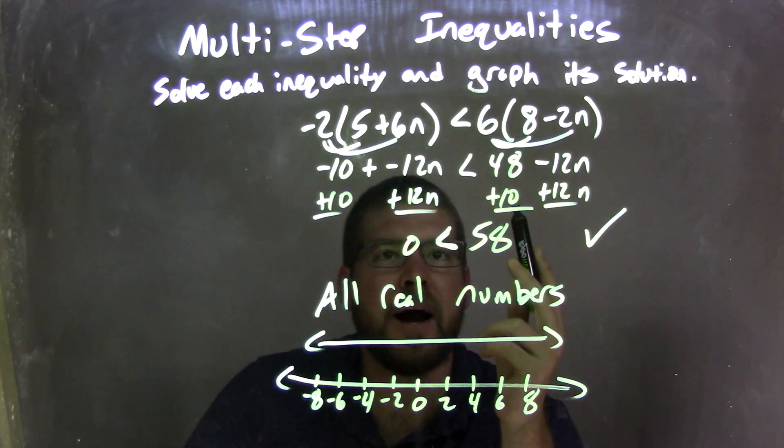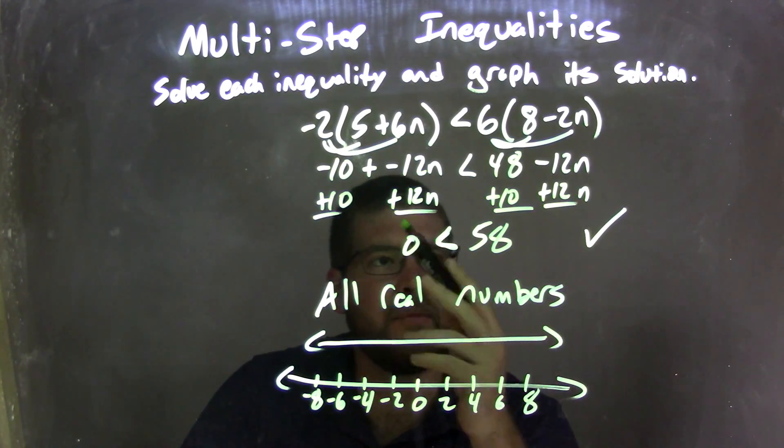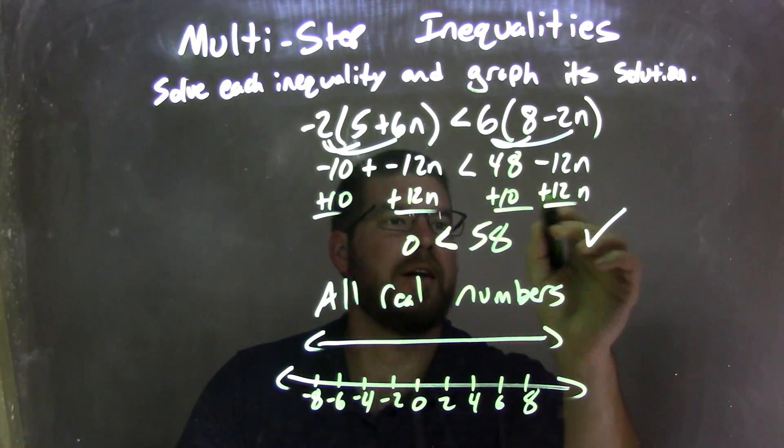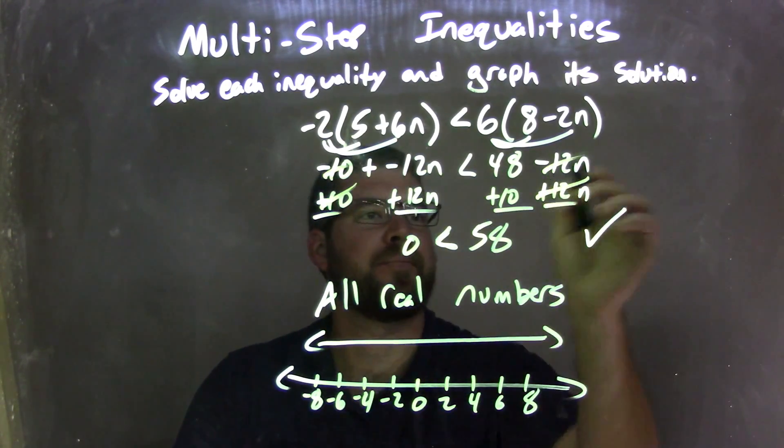I then combined my like terms, so I brought my n to the left, my numbers to the right. Negative 12n plus 12n is 0, and 48 plus 10 is 58.